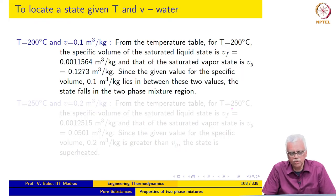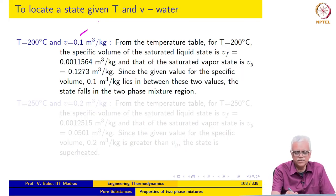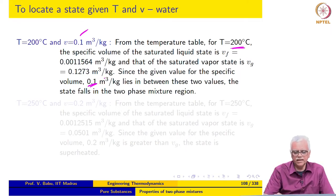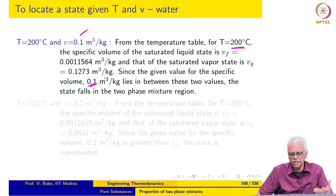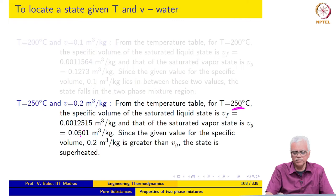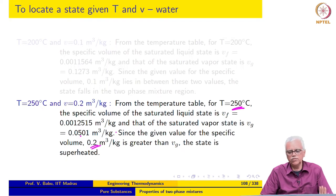In the same manner you can go through more examples. T = 200°C, V = 0.1: you should be able to retrieve from the temperature table that Vf and Vg bracket the given V, so it lies in the two-phase mixture region. For 250°C and 0.2 m³, you retrieve Vf and Vg from the temperature table, and since the given specific volume is greater than Vg, the state is superheated. This is how we locate states on a PV or TV diagram for water or R134a.